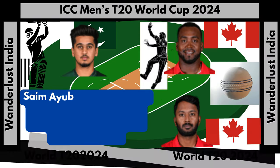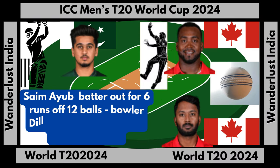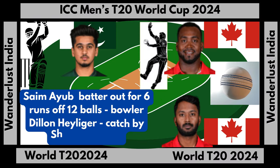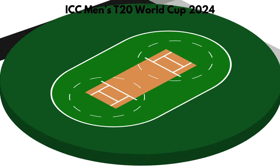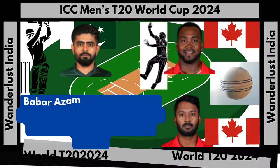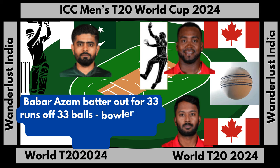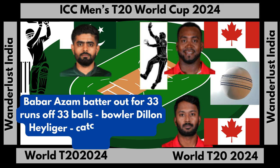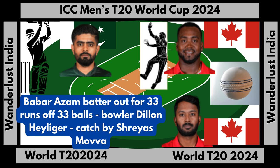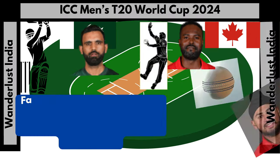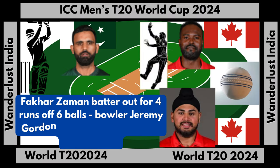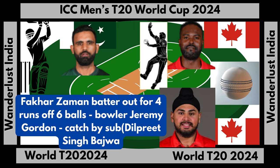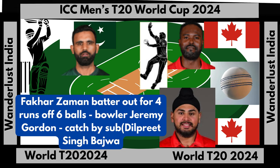Siam Ayub batter out for six runs off 12 balls, bowler Dylan Heiliger, caught by Shreyas Mova. Babar Azam batter out for 33 runs off 33 balls, bowler Dylan Heiliger, caught by Shreyas Mova. Fakhar Zaman batter out for four runs off six balls, bowler Jeremy Gordon, caught by substitute Dilpreet Singh Bajwa.